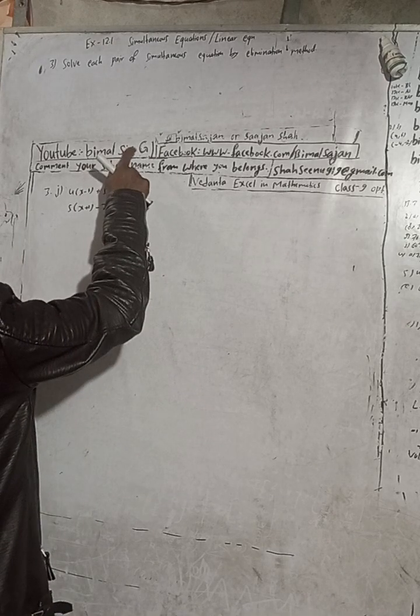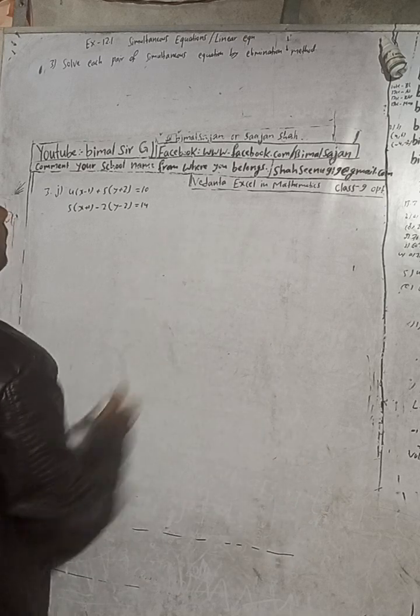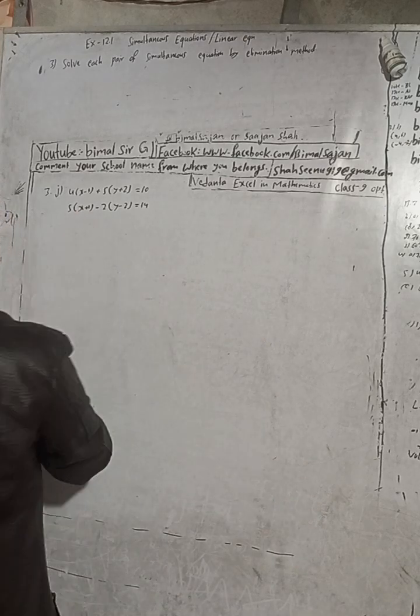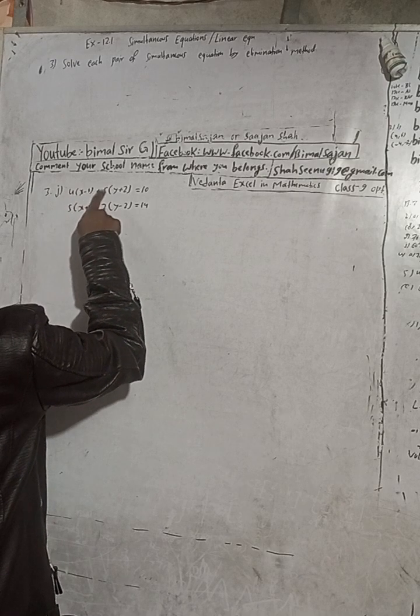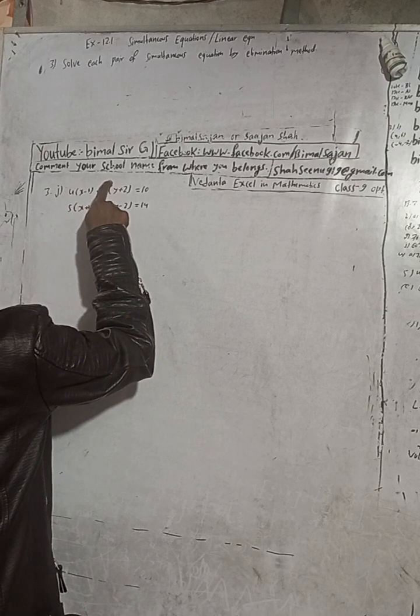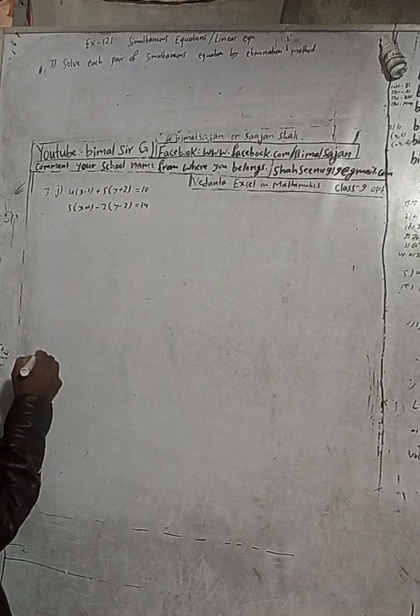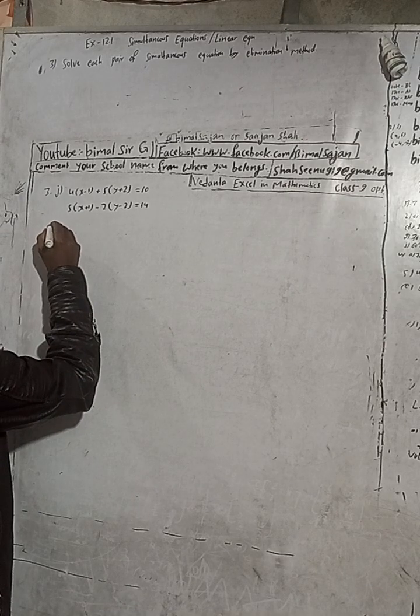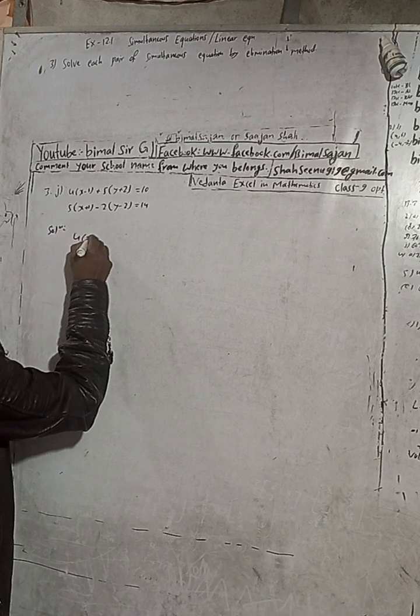This is my YouTube channel. Check the playlist; if you don't find any videos, comment and I will try to upload that video. Here the question is: 4(x - 1) + 5(y + 2) = 10. So this equation first I will write here. Now here solution, I will take this equation first.